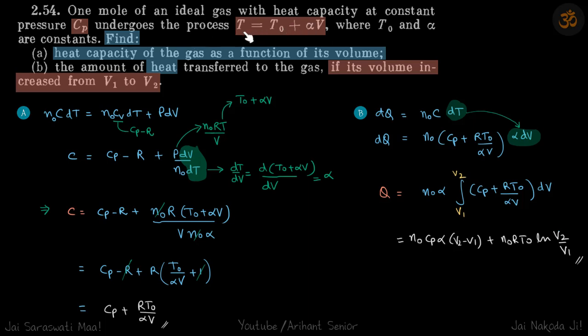So our gas undergoes the process T is equal to T0 plus alpha V. We need to find the heat capacity of the gas as a function of volume and heat if volume increases from V1 to V2.